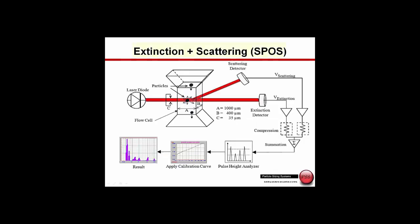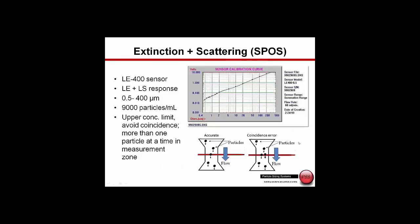In order to improve the dynamic range, Particle Sizing Systems has created the single particle optical sizing sensor, which has both an extinction sensor plus a scattering sensor. We're actually going to use a detector to look at this additional light scattering, which we could think of as a positive pulse. We take these two pulses, the extinction and the scattering, combine them, and then take this combined pulse and use it to convert to the size distribution.